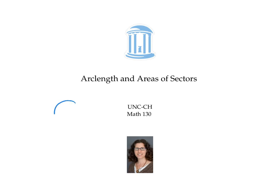If you have a circle, a piece of the circumference is called an arc, and a wedge of that circle is called a sector. This video explains how to calculate the length of the arc and the area of the sector in terms of the angle and the radius of the circle.